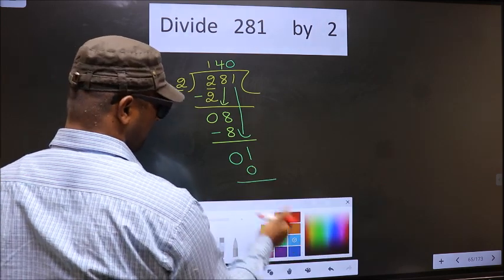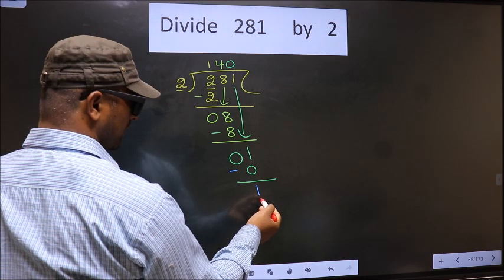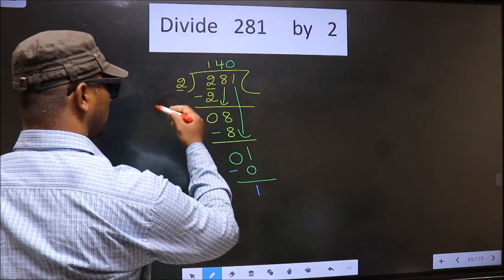Now, you subtract. 1 minus 0, 1. Over here, we did not bring any number down, and 1 is smaller than 2.